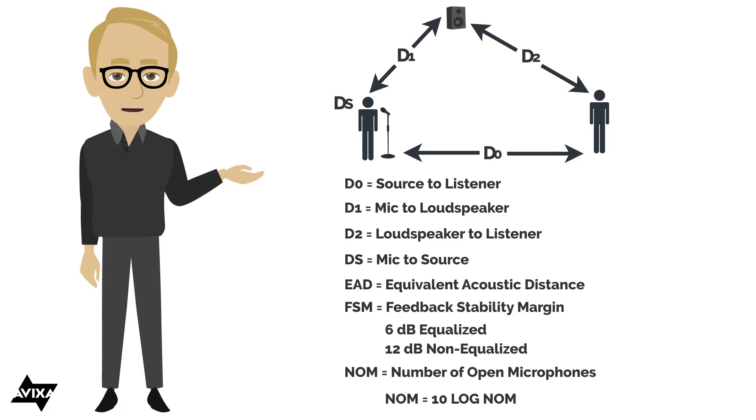And lastly, what we're going to factor in is NOM, which stands for Number of Open Microphones. This is going to be a 10-log function. And since it's 10-log, that relates to power. What you find is every time I double the number of open microphones, I lose 3 dB before feedback. That's because you're doubling the acoustic power that's going into the system by opening up a second microphone.